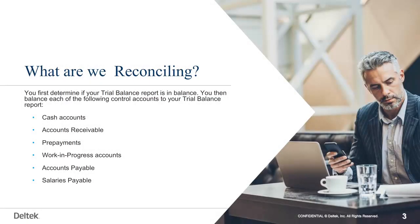You first determine if your trial balance report is in balance. You then balance each of the following control accounts — such as cash, accounts receivable, prepayments, work in progress, accounts payable, and salaries payable — to the correlating subledger reports in Azira. For example, if we are reconciling the accounts payable control account, then the vendor invoice aging is the correlating subledger report. For the cash control account, the bank reconciliation report is your correlating subledger report.